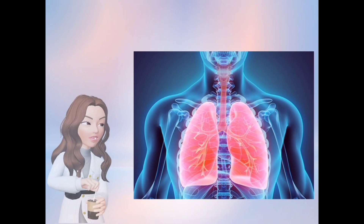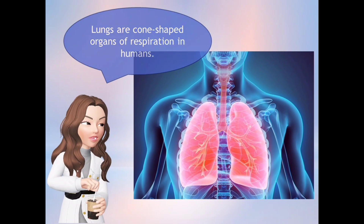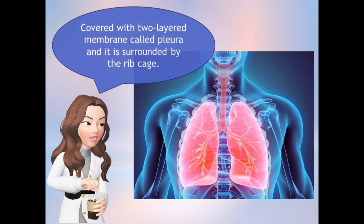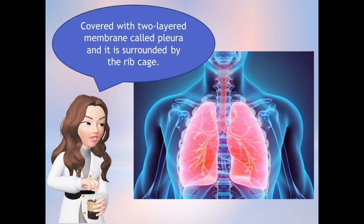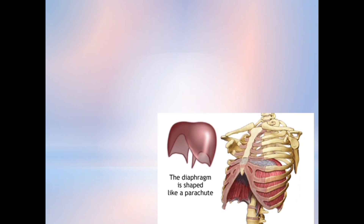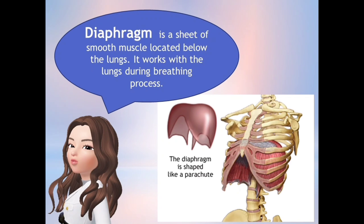The lungs are cone-shaped organs of respiration in humans, covered with a two-layer membrane called the pleura, and surrounded by the ribcage. Next is the diaphragm. The diaphragm is a sheet of smooth muscle located below the lungs, and it works with the lungs during the breathing process.